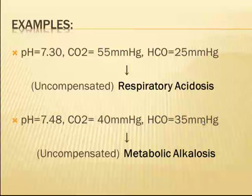In the next example, the pH is 7.48 — above normal, so alkalosis — and the CO2 is 40, which is within normal range. The bicarbonate is 35, which is above the normal 26 mEq/L. The problem is the bicarbonate, which is a metabolic issue. Since the pH is alkalotic, the patient's diagnosis is uncompensated metabolic alkalosis.